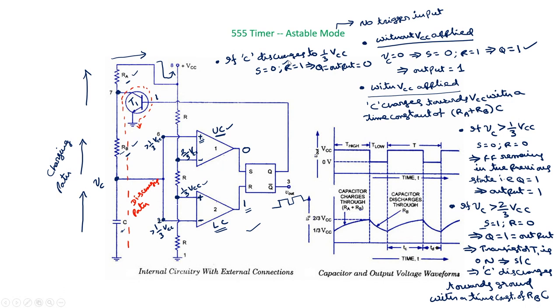With this new state, transistor T1's input becomes 0, so T1 turns off. There is now no path for the capacitor to discharge, so the capacitor starts charging again towards Vcc with time constant (RA + RB) × C. When it charges to 2/3 Vcc, the output goes high again. The voltage across the capacitor thus switches between 1/3 Vcc and 2/3 Vcc, and the output also switches between high and low.